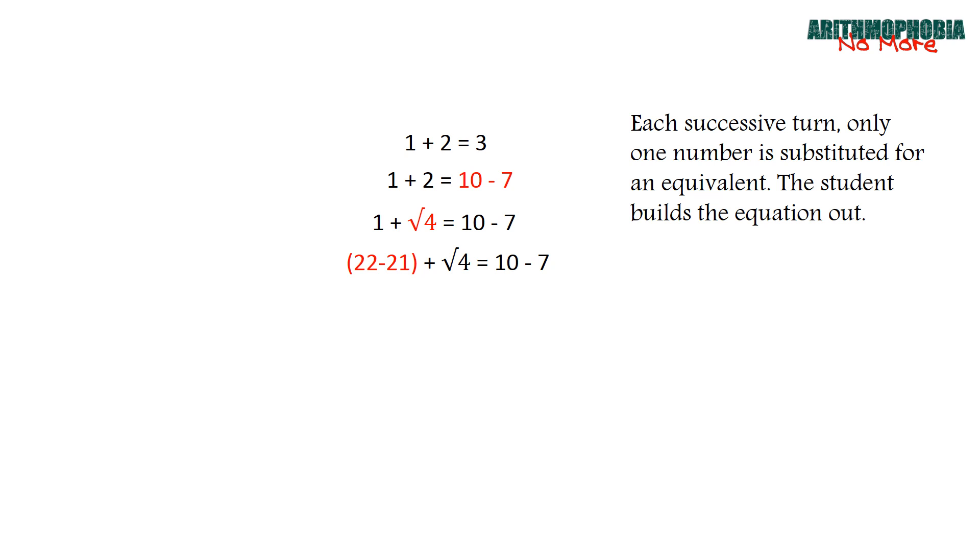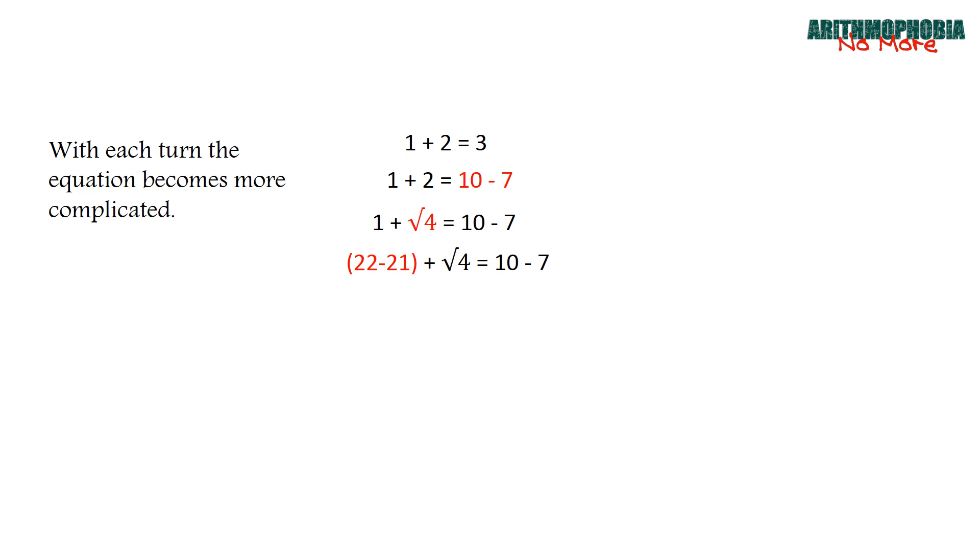So in this next statement we have taken the number one and we have substituted that with the statement 22 - 21. In the next one, we're going to take the ten and we will substitute that with 2 × 5. So now our statement reads (22 - 21) + √4 = (2 × 5) - 7.